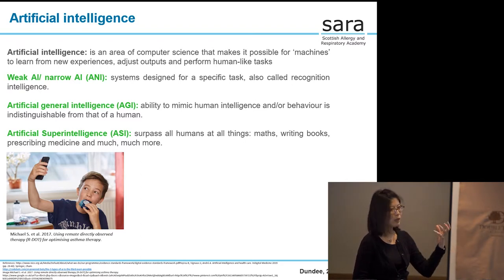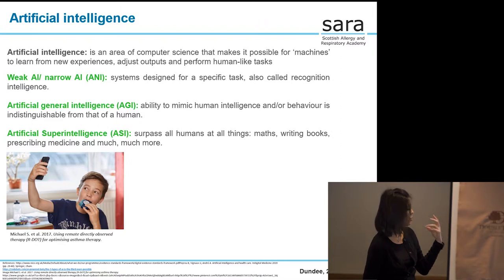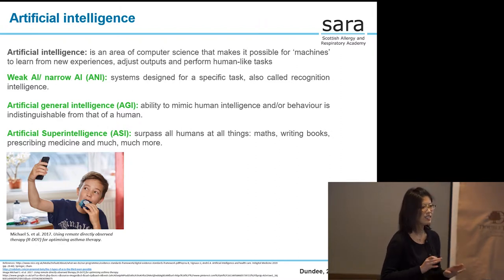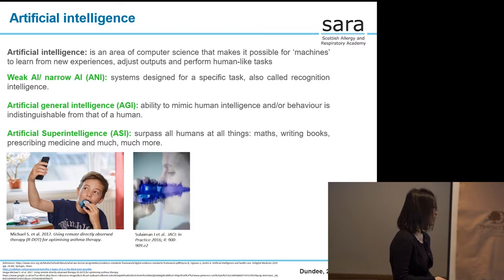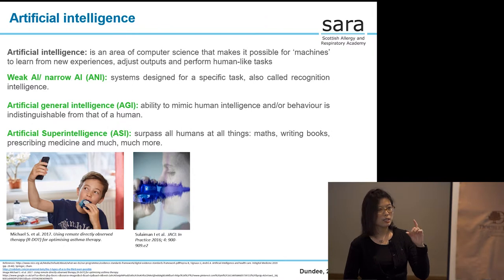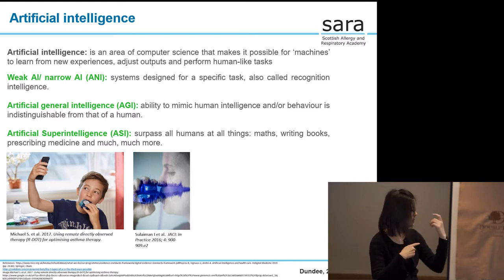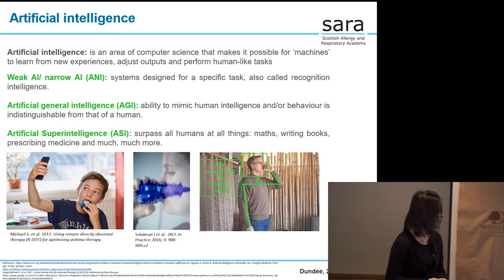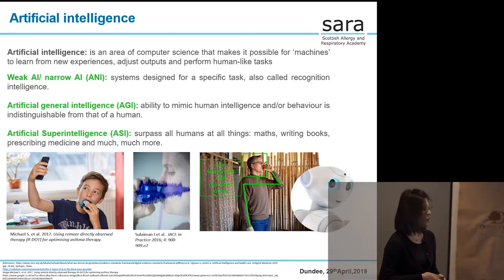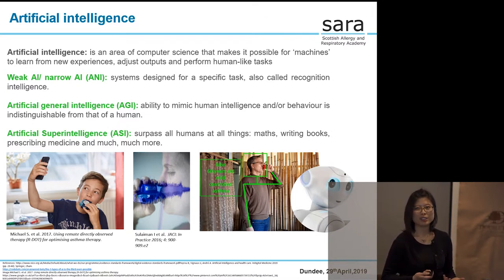When telehealth products claim to use AI for prediction models, they most likely use weak AI or AGI — artificial super intelligence is not yet available in the market. One research example used a mobile phone to capture people's inhaler technique behavior, though without AI yet. In the future, could we use AI to directly detect inhaler technique, or use a higher-level robot to monitor whether patients are performing inhaler steps correctly at home?